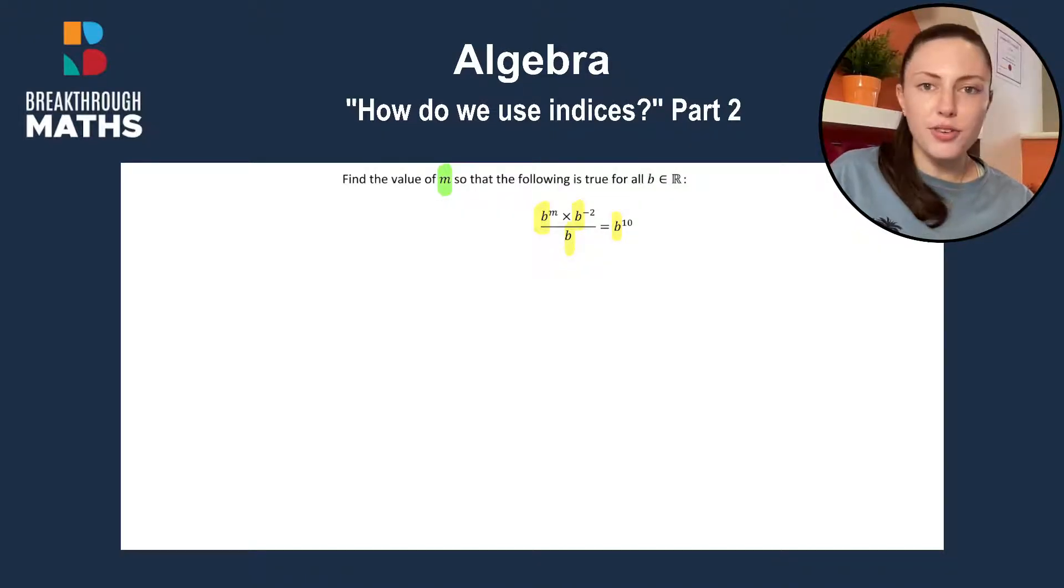So there's many different ways that you can come at this question. I'll show you two of those ways. So one of the ways you can do is starting off by moving the B over to the right hand side to get rid of the dividing on the left. That will leave you with B to the power of M by B to the power of minus 2 is equal to B to the power of 10. And what will happen to B when it moves over? Well, it'll change from divide to multiplied by B.